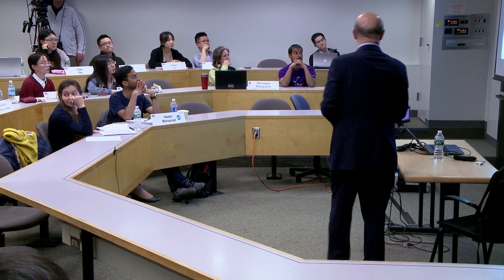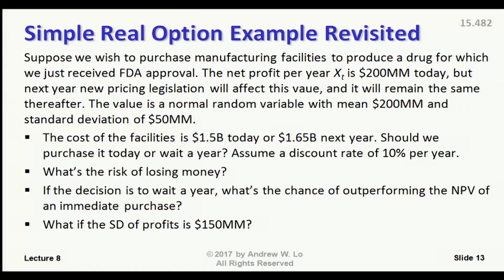We're going to do an example — one that you've already seen. It's the real option example from a couple of classes ago. But now what I'm going to do is replace the binary outcome of success or failure with a random variable.